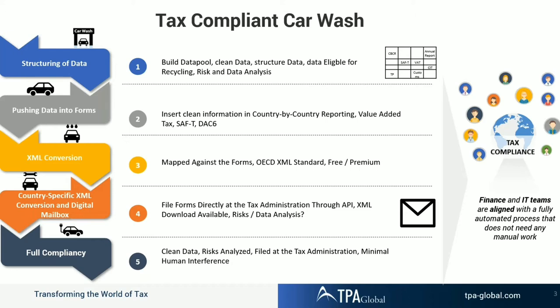The first and foremost item in the car wash approach is structuring the data. Data comes from multiple ERPs or different source systems such as POS or different accounting software, in a variety of formats. From our previous implementations, we've seen that data forms 80 to 90 percent of the business challenge or automation challenge. Once that particular hurdle is crossed, the rest of the process becomes very efficient.